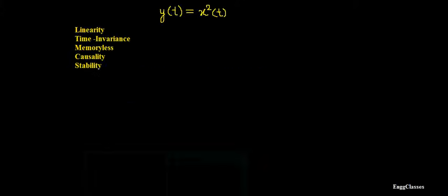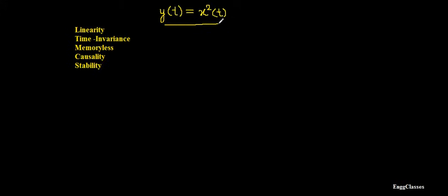Welcome to ng classes YouTube channel. In this video we will consider an example on properties of a system. The system considered here is y(t) = x²(t). The task is to test if the system is linear, time invariant, memoryless, causal, and stable.